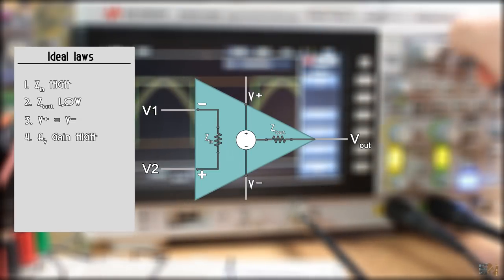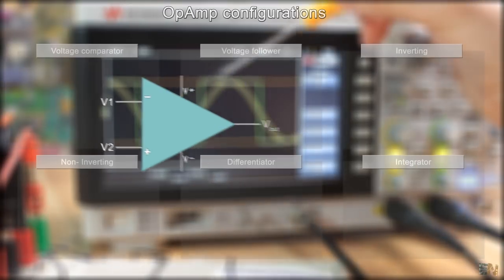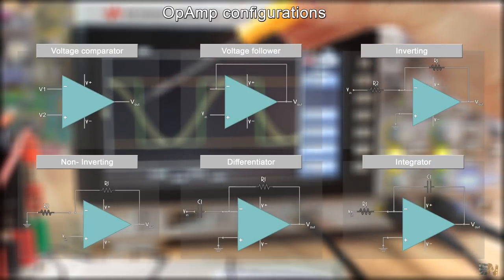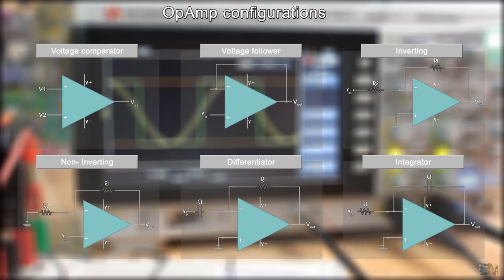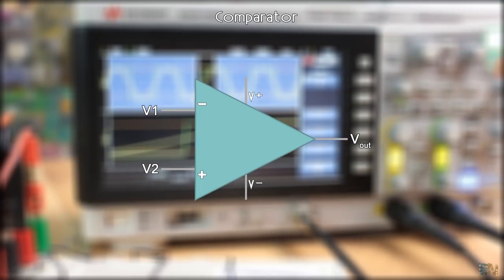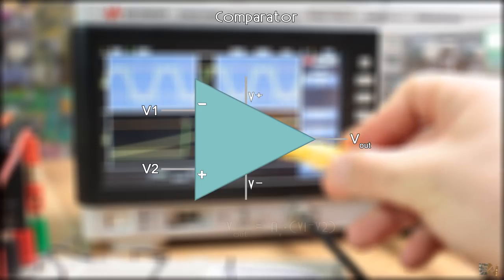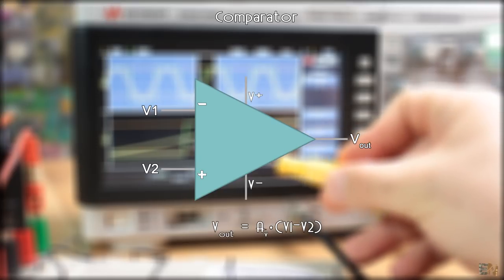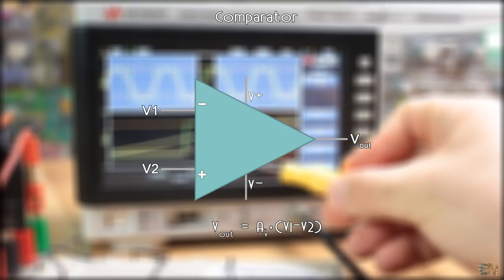Great guys, using these basic ideal laws, let's talk about the comparator configuration. As its name tells us, this configuration will compare which of the inputs is higher. The output of this configuration is the difference between the two inputs, multiplied by the amplifier gain.